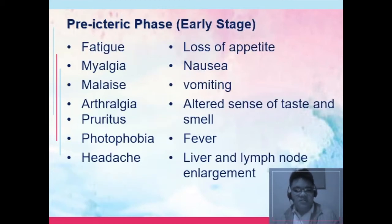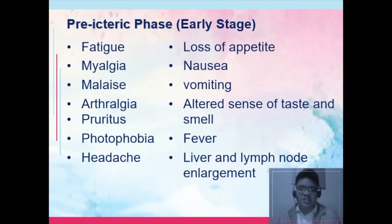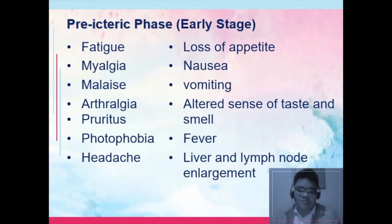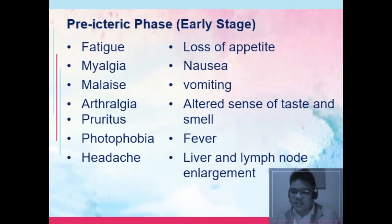Signs and symptoms of hepatitis can be divided into three phases: pre-icteric, icteric, and post-icteric (convalescent). In the pre-icteric phase — the early stage — mild flu-like upper respiratory tract infection symptoms occur. The patient would have low-grade fever, fatigue, muscle pain (myalgia), malaise, arthralgia (joint pain), pruritus (itchiness), photophobia, headache, loss of appetite, nausea, vomiting, altered sense of taste and smell, and liver and lymph node enlargement. These are vague pre-icteric signs.